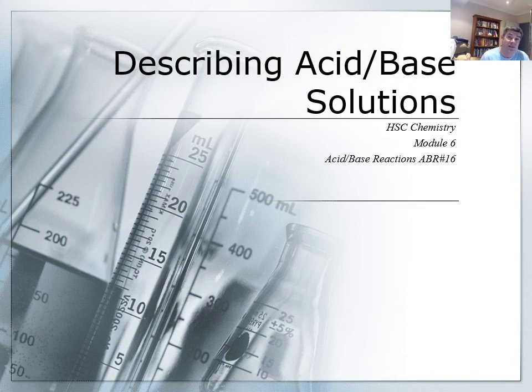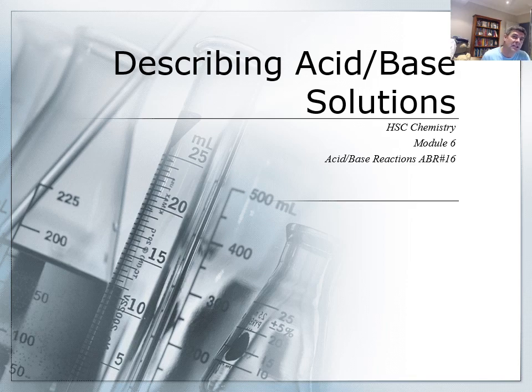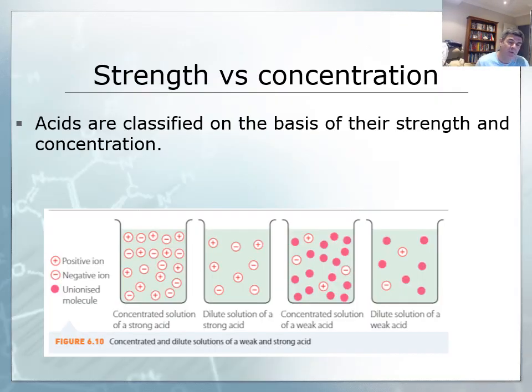This is video number 16 and we're going to look at two of the key terms that we use to describe acid and base solutions. We've already had a look at some of the different ways in which different substances behave, how we classify them on the basis of their ability to donate or accept a proton, or indeed their ability to do both. But there's another way that we describe acids and bases and that's on the basis of their strength or concentration.